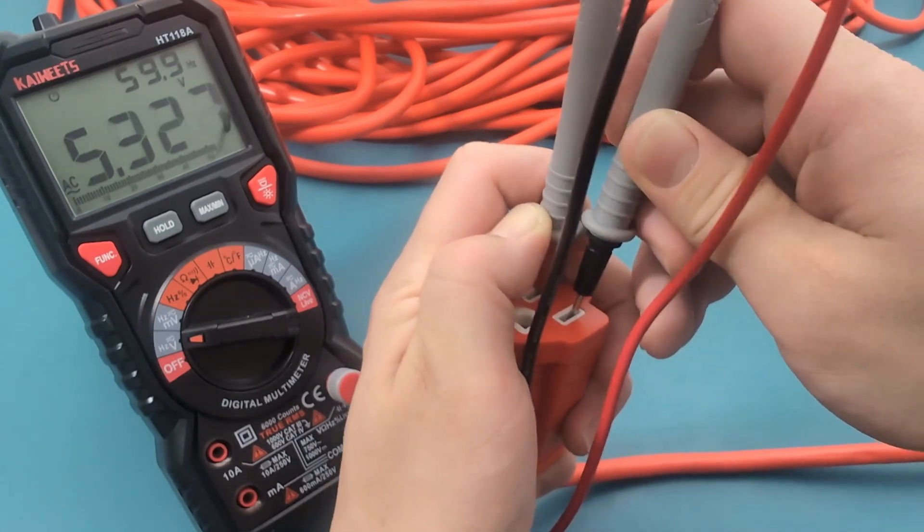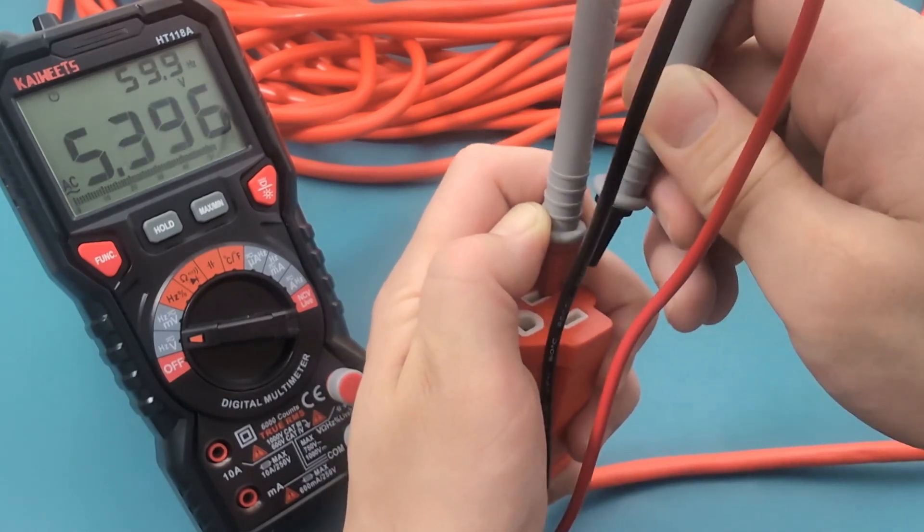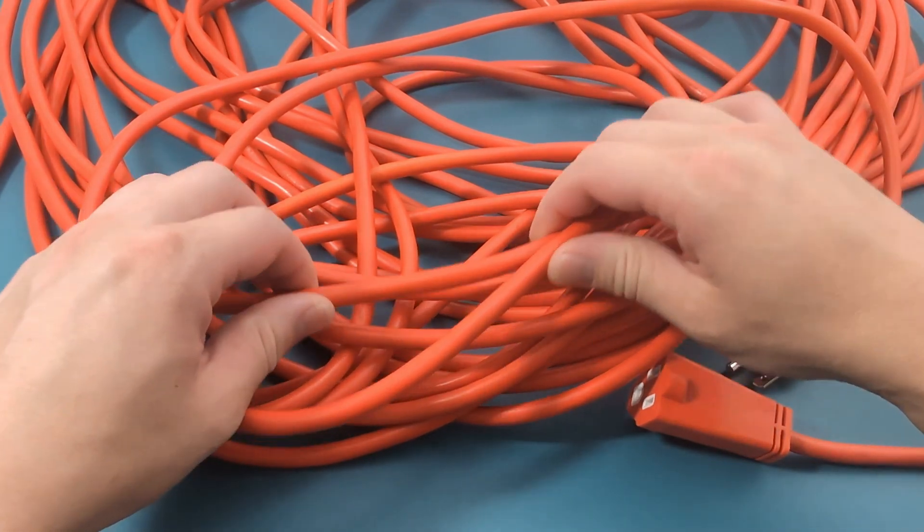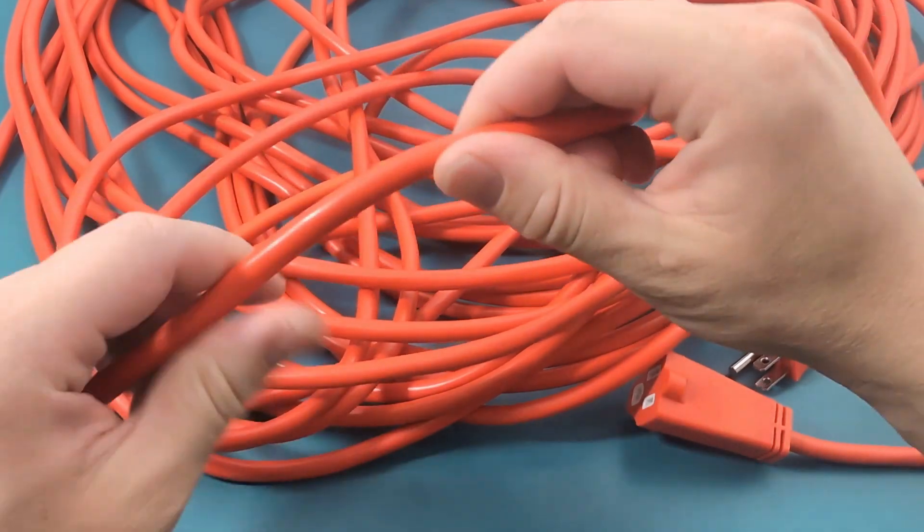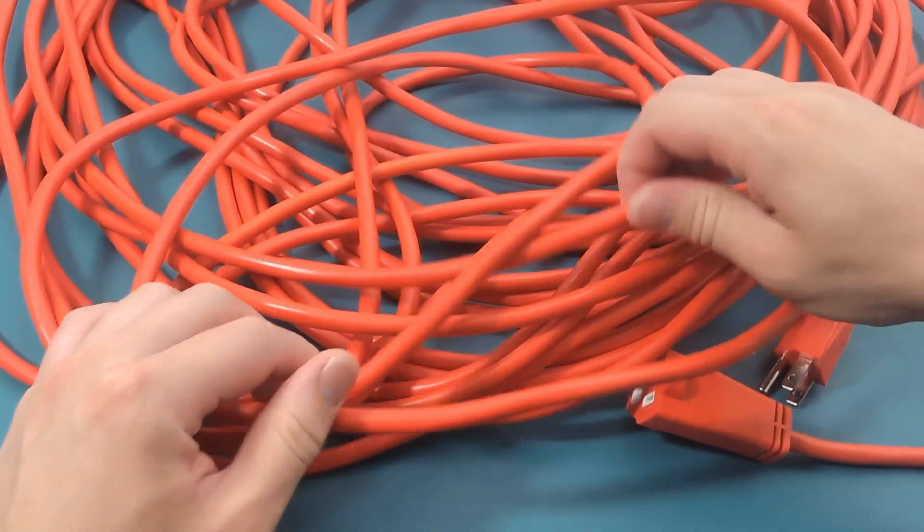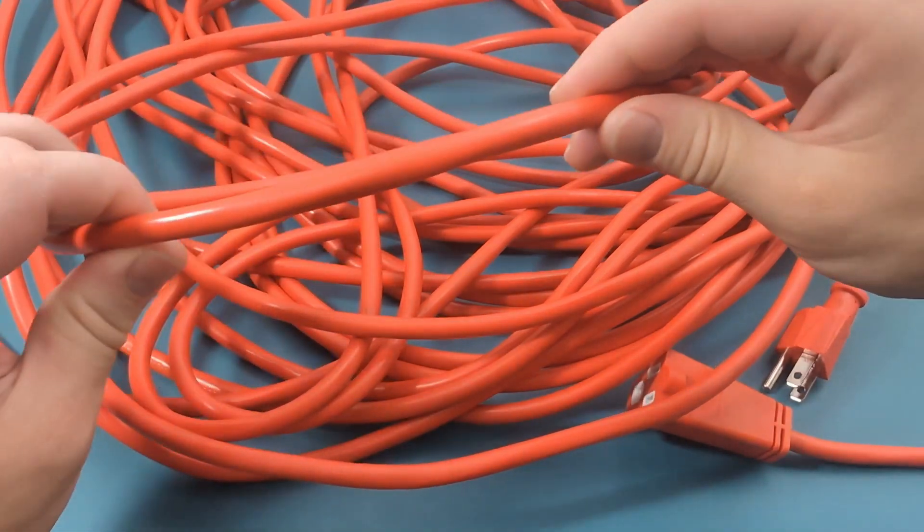Since you've stayed until the end, here are three pro tips for you. Pro tip number one: Always inspect your extension cords for physical damage before testing. Look for frayed wires, cracks in the insulation, or any other signs of wear and tear. Damaged cords can be a fire hazard and may lead to electric shock.